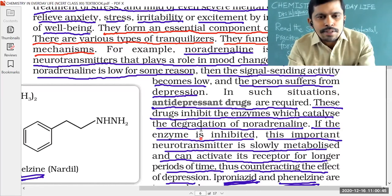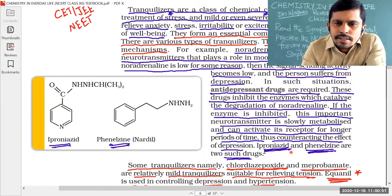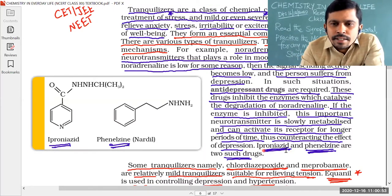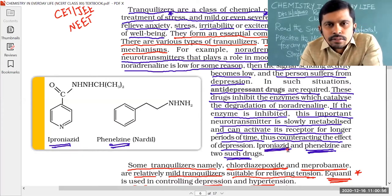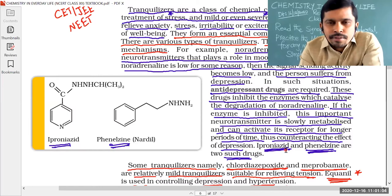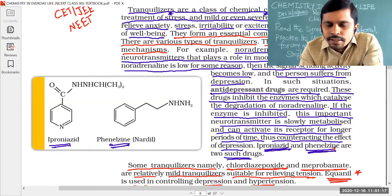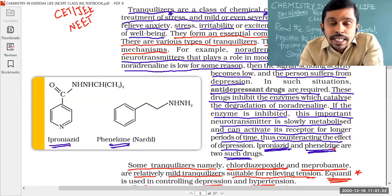I am going to show you the structure of the molecules. Some more examples of tranquilizers as anti-depressant drugs are iproniazid and phenelzine. The spelling and pronunciation are a little difficult as these are new words. Please read and pronounce properly — iproniazid and phenelzine are examples of tranquilizers.